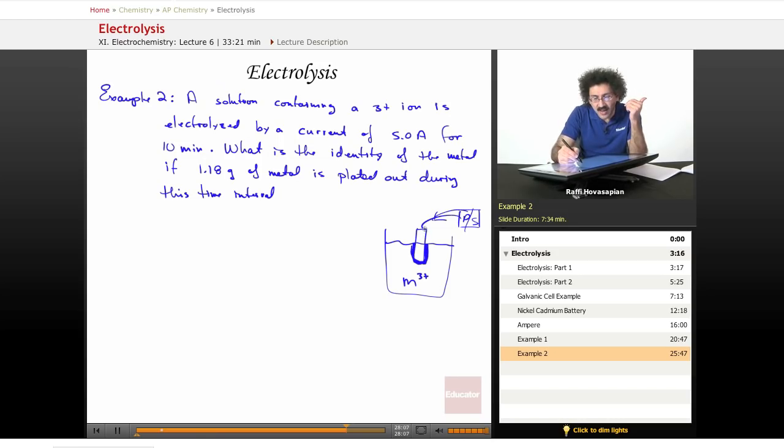Well, let's say I already weighed out this metal electrode before anything plated out. And then after the process was done, after the 10 minutes, I take it out, I dry it, and I weigh it again. The difference in the weight is 1.18 grams. That's what it's saying. This deposit is 1.18 grams of the metal is actually plated out during this time interval.